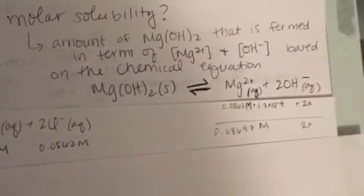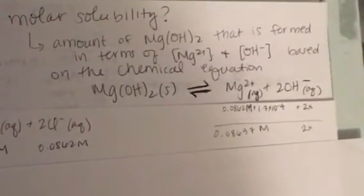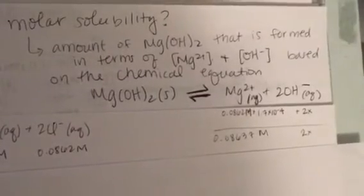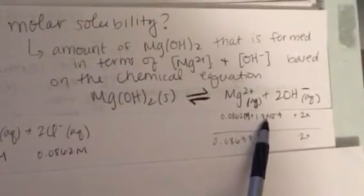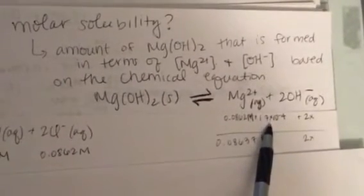So what I'm going to do is I'm going to take my equilibrium expression here, and instead of starting with X for magnesium 2 plus, I already know that I had dissociated some amount—a very small amount to begin with—and so if I add 0.0862, that's going to be a pretty large difference in having that concentration there.